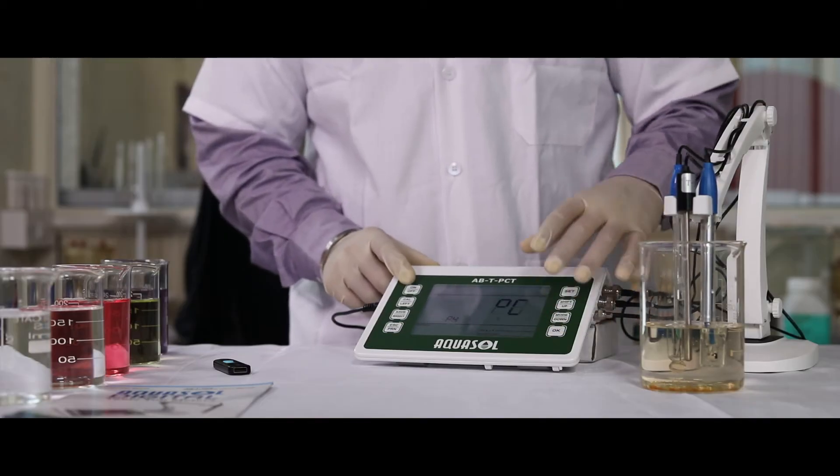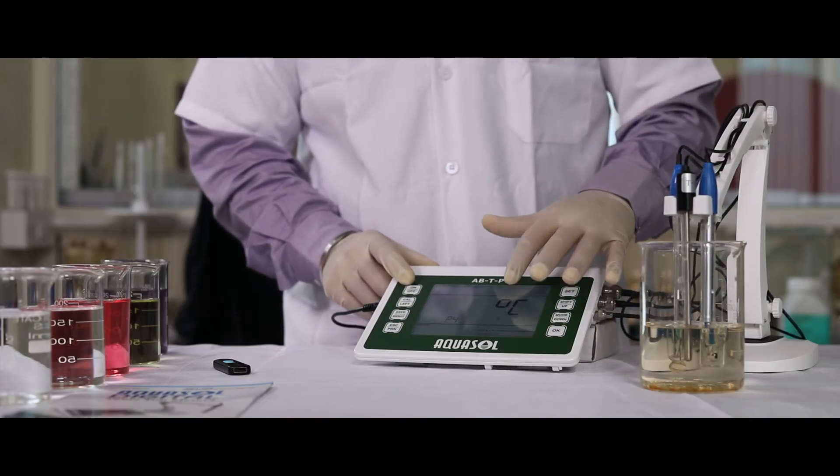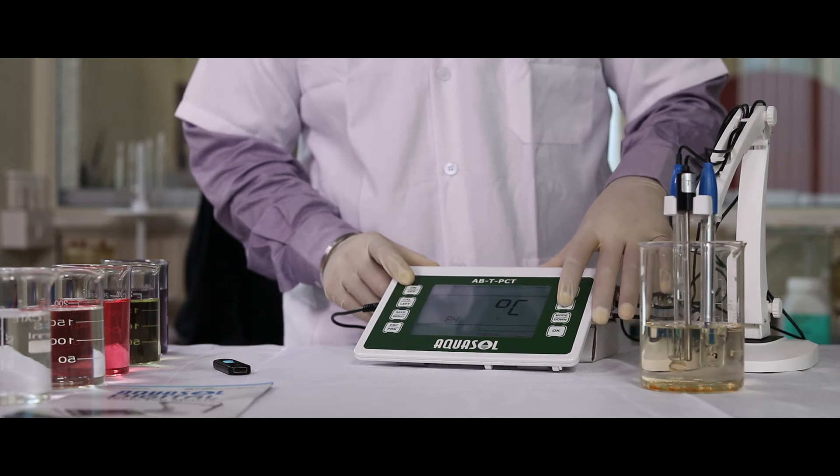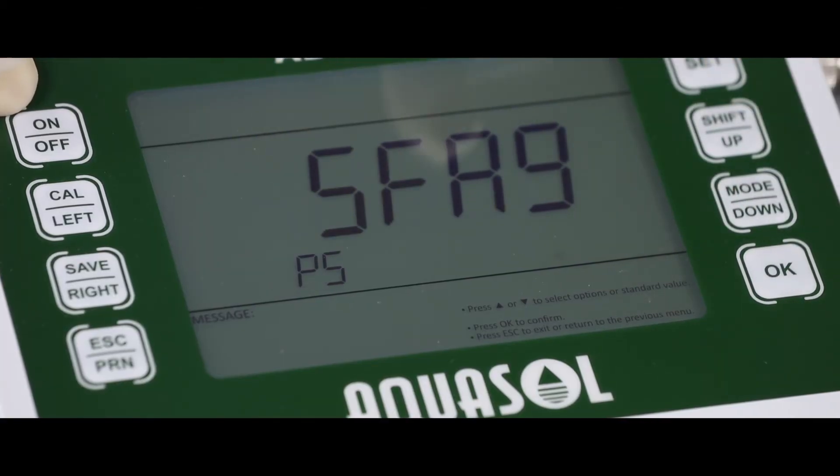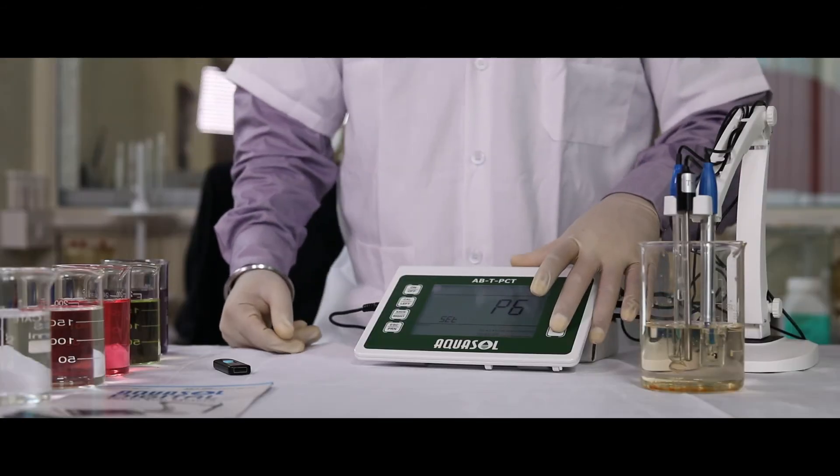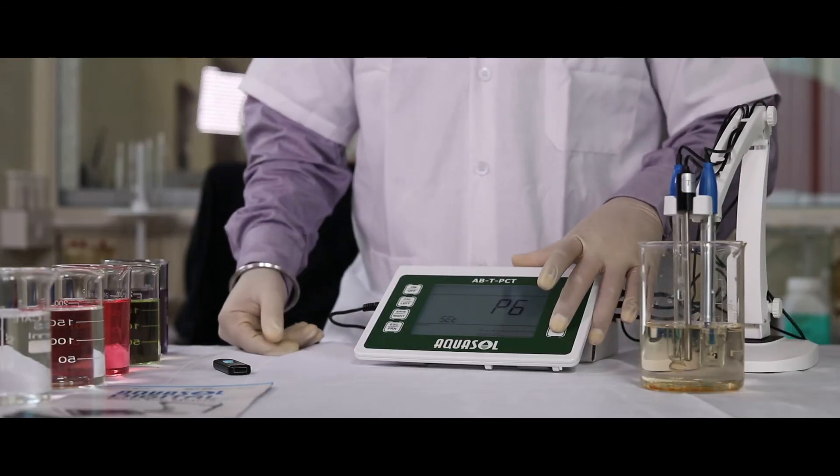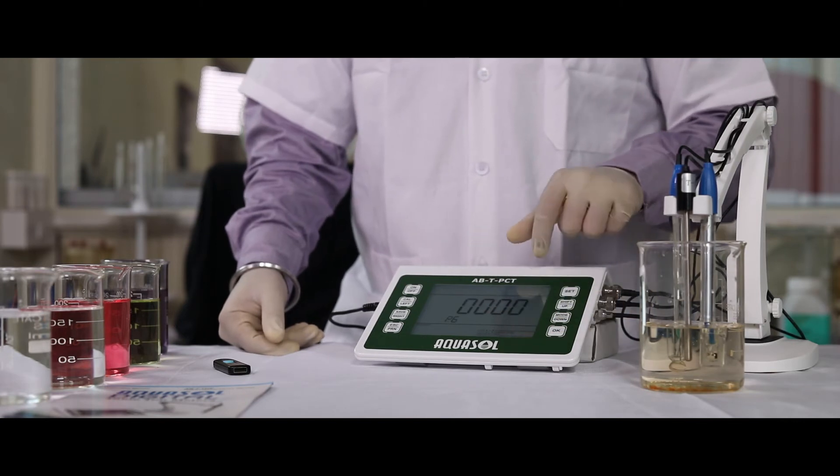P4 to change the unit of temperature. P5 is the meter code. P6 is the authorization code for the Bluetooth app.